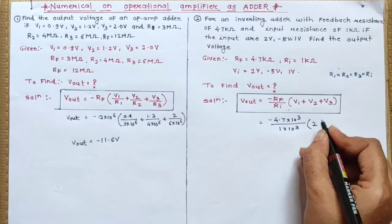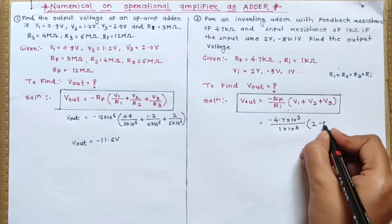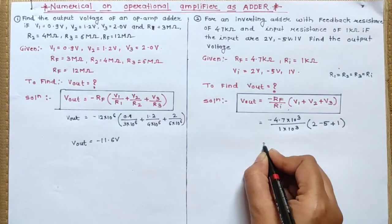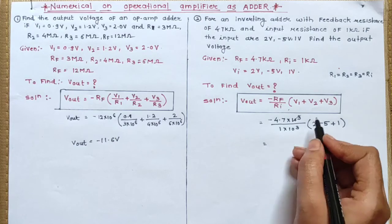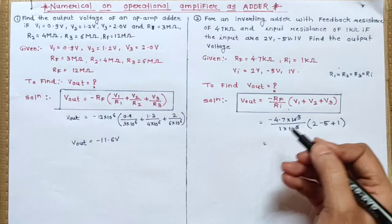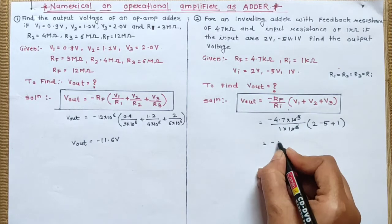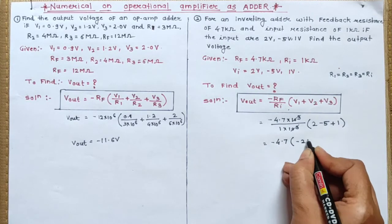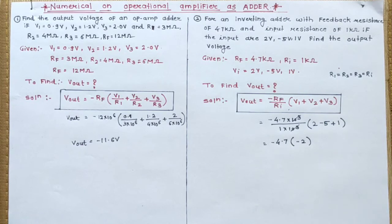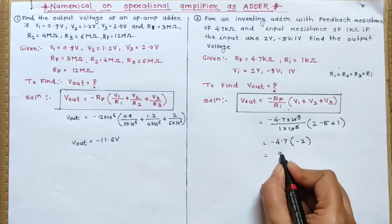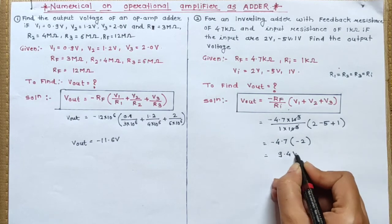What is the value of V1? 2. What is the value of V2? Minus 5. What is the value of V3? 1. So after performing this calculation, in this case 10 raised to the power 3 and 10 raised to the power 3 cancel out with each other. Minus 4.7 in bracket, 2 minus 5 plus 1 comes out to be minus 2. So minus minus gets plus and the answer comes out to be 9.4 volt.